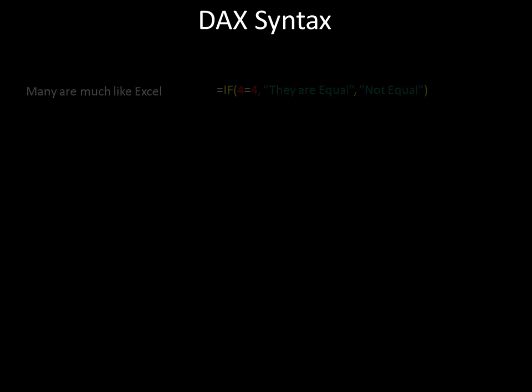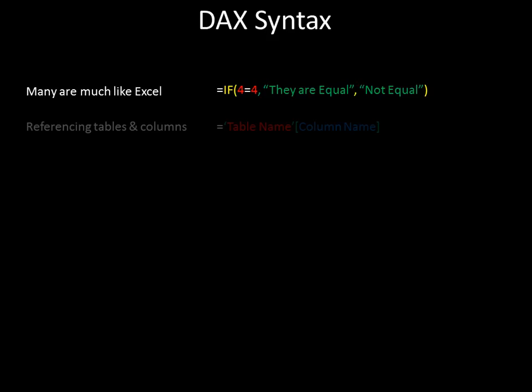Let's look at basic DAX syntax before we write any of it. Many DAX expressions look just like Excel. For example, an IF expression: if 4 equals 4 — which will always be true — this expression returns the string 'they're equal,' otherwise 'not equal.' Excel's equivalent is almost identical; it just has one more 'i' in the IF function, but otherwise it's the same. DAX expressions also very often reference tables and columns.